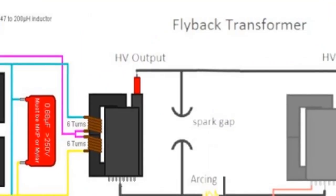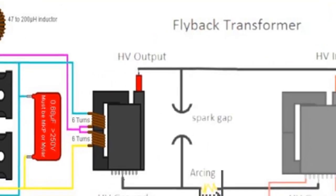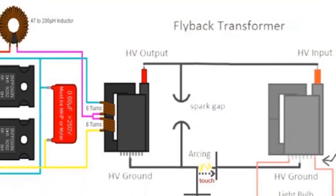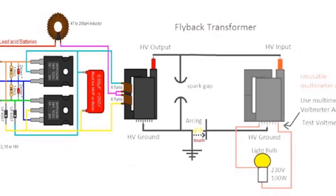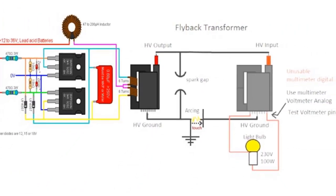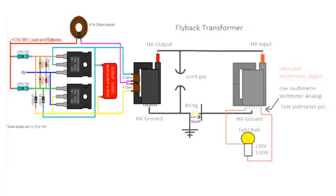Tesla's original plan was to use a large coil called a bifiler coil to generate the energy, but he ran out of money before he could complete the project. The tower was eventually destroyed by creditors in 1917.